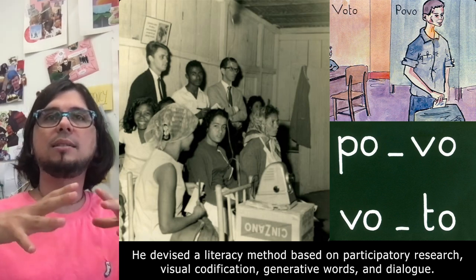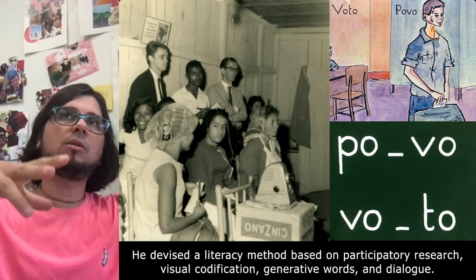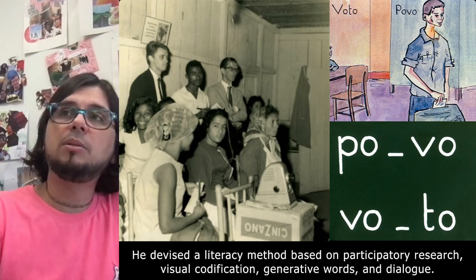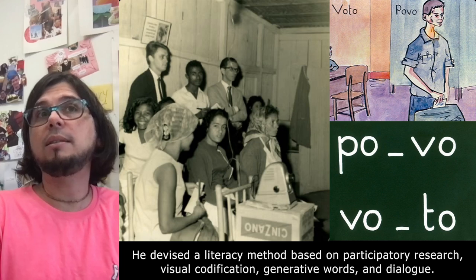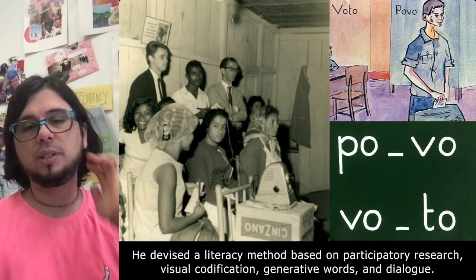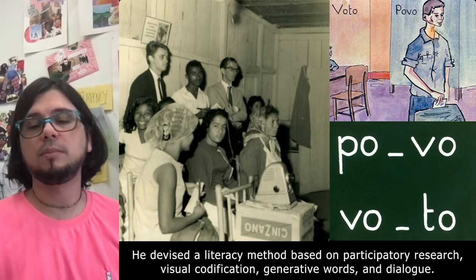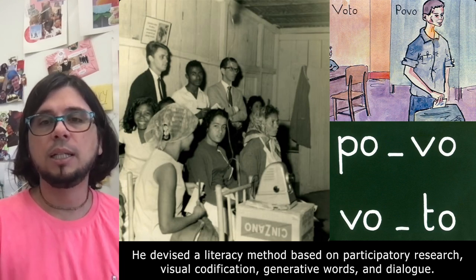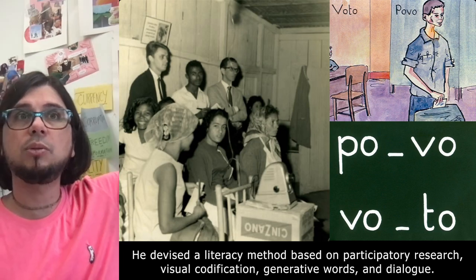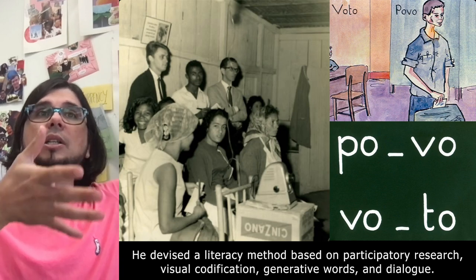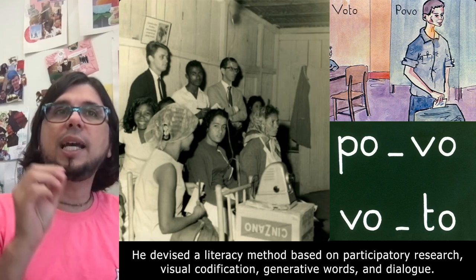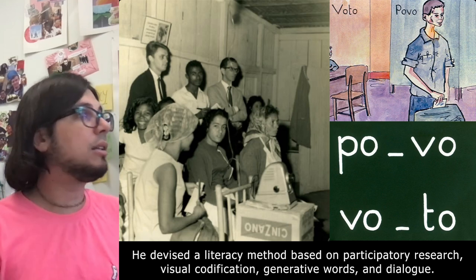He started to devise a local literacy program that grew and became a national literacy program that would enable people who could not read and write to get what they need to vote. He created a method for literacy known as the Paulo Freire method, based on three elements: visual codification — artists working with Paulo Freire created visuals to help people understand the concrete representation of the world before learning the word. The words were carefully chosen to provoke debate, which is why they are called generative words.